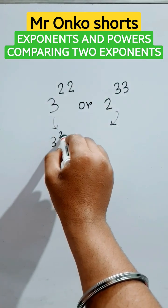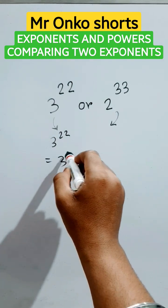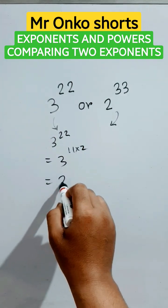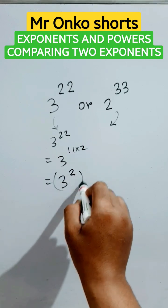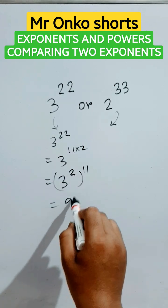3 to the power 22 can be written as 3 to the power 11 times 2. This is 3 to the power 2 raised to the power 11, which equals 9 to the power 11.